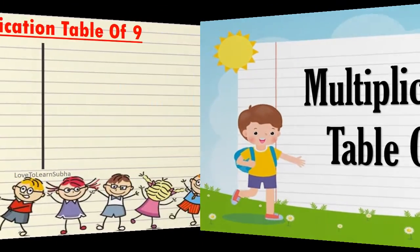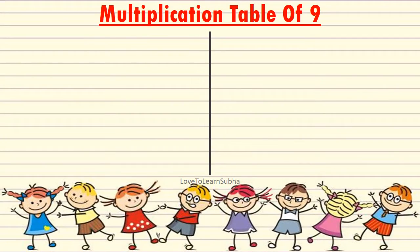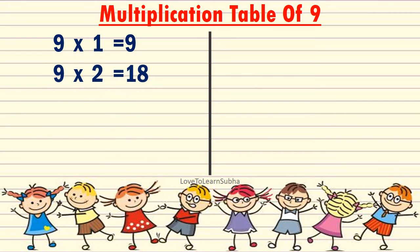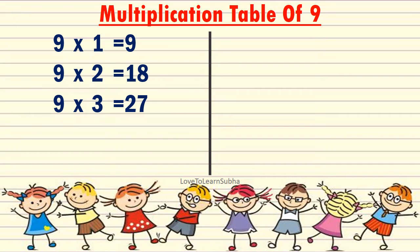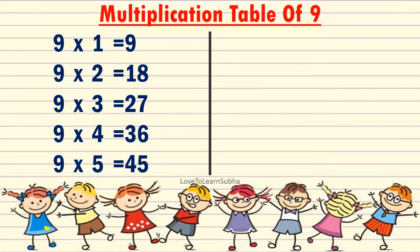9 1's are 9, 9 2's are 18, 9 3's are 27, 9 4's are 36, 9 5's are 45.